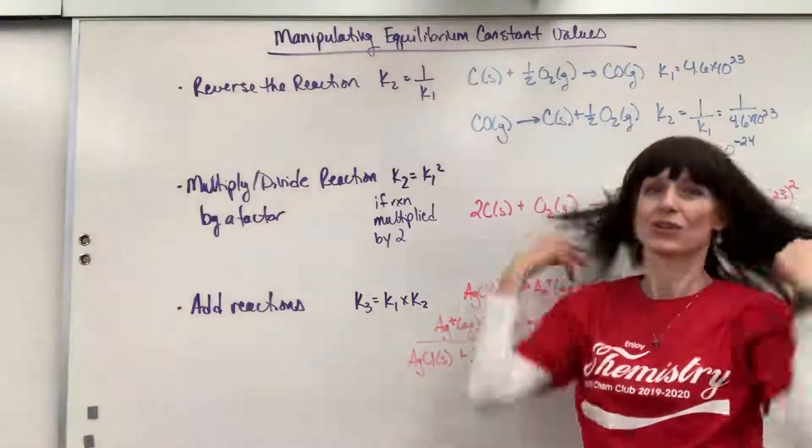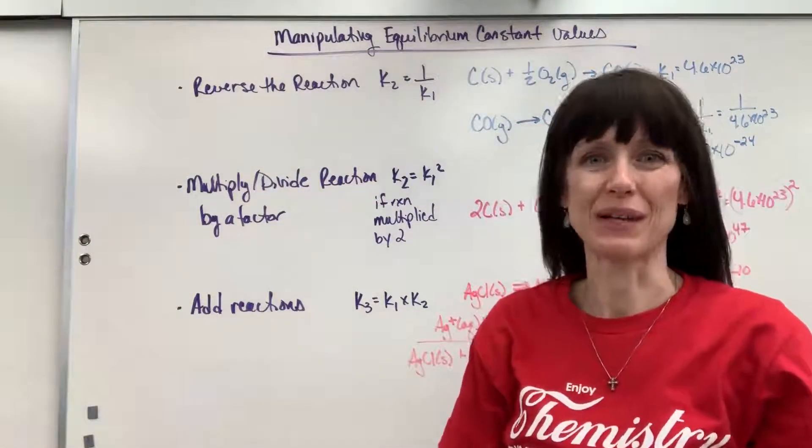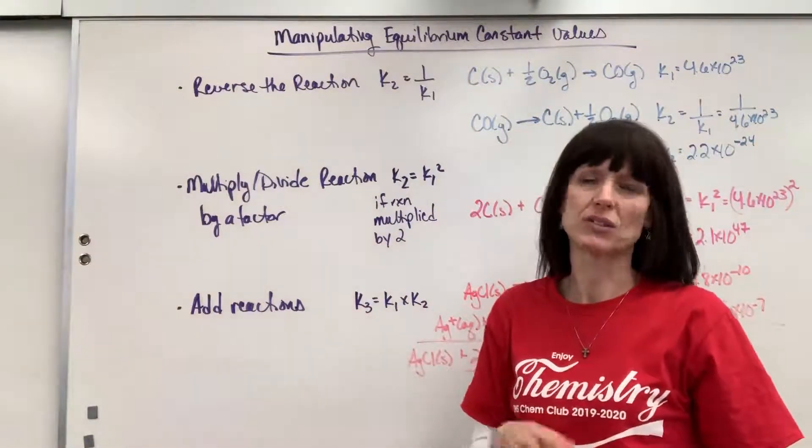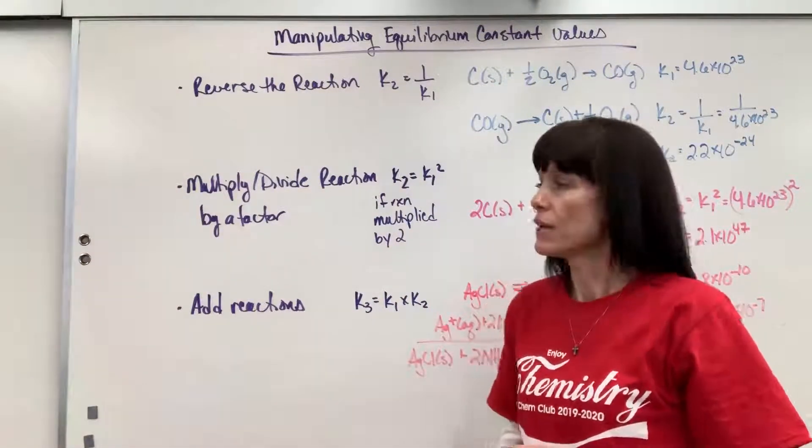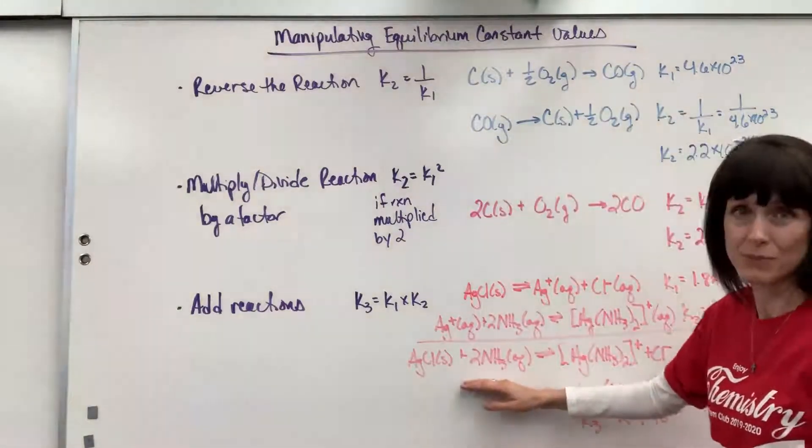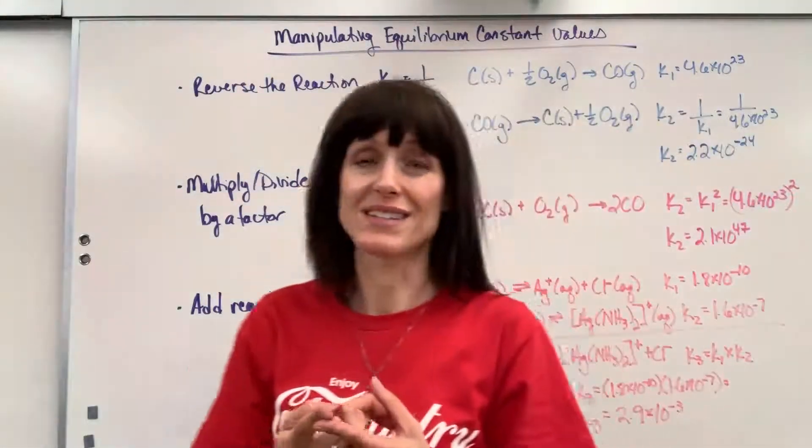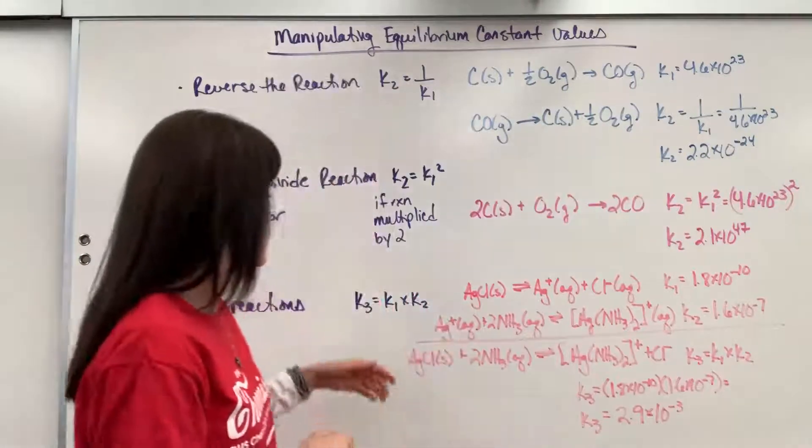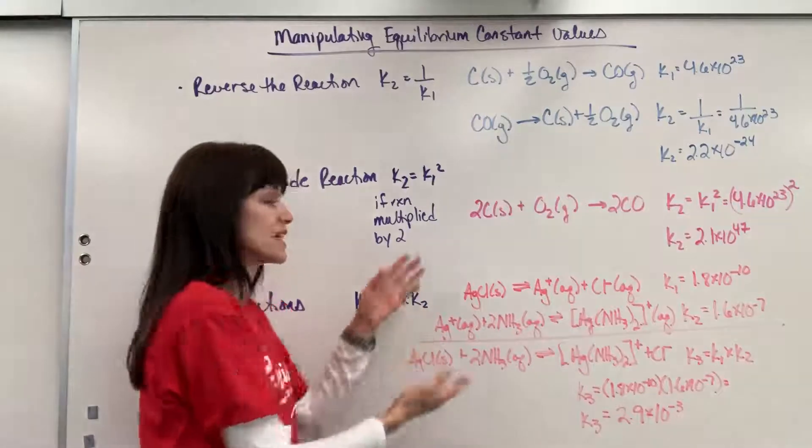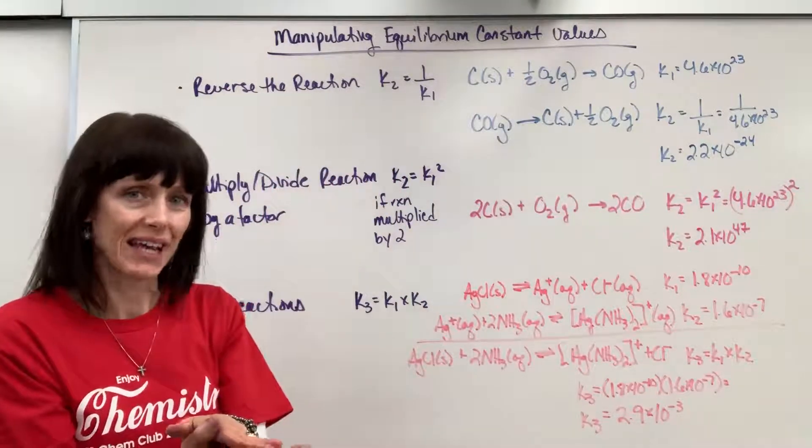Okay, now our last one, third type of manipulation with an equilibrium expression is going to be if you add reactions together. So we do this like in Hess's law. If you know the equilibrium expressions, you can actually find the equilibrium expression of the overall reaction, the sum of the reactions. And here's how you do it. You multiply the equilibrium expressions of the reactions that are added together.